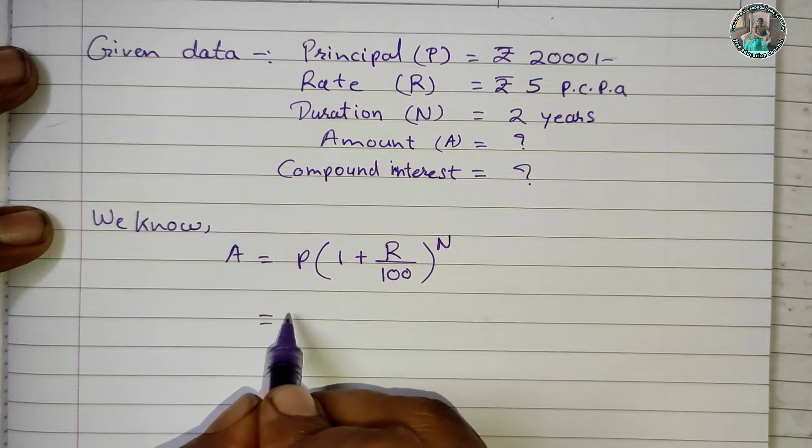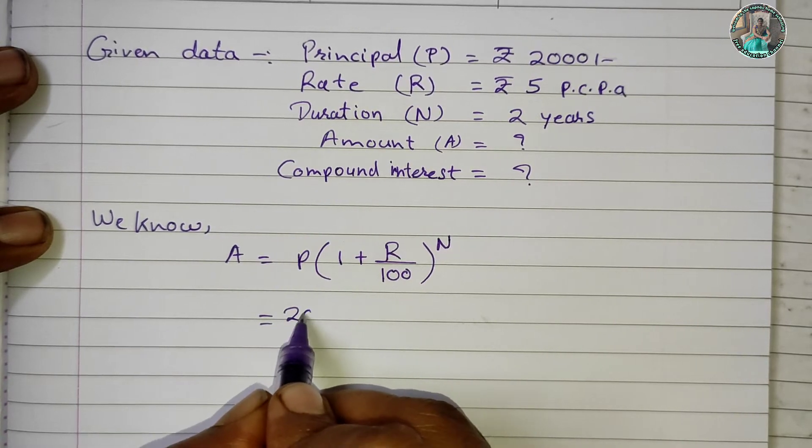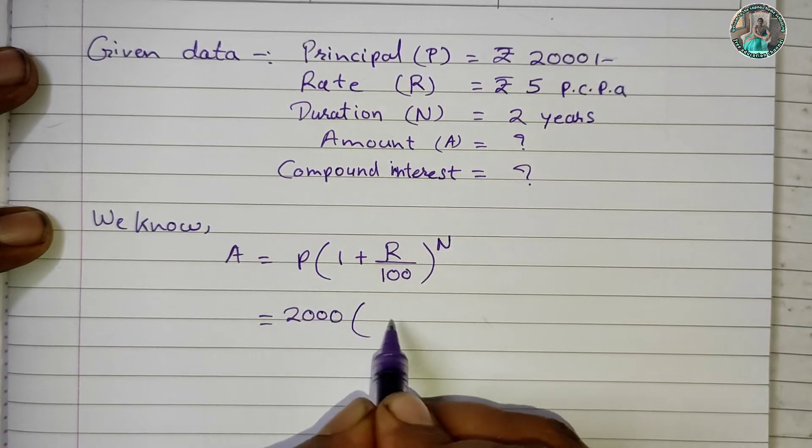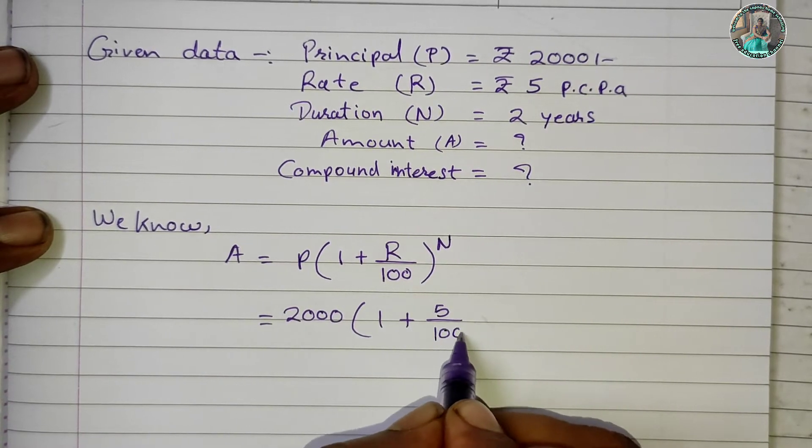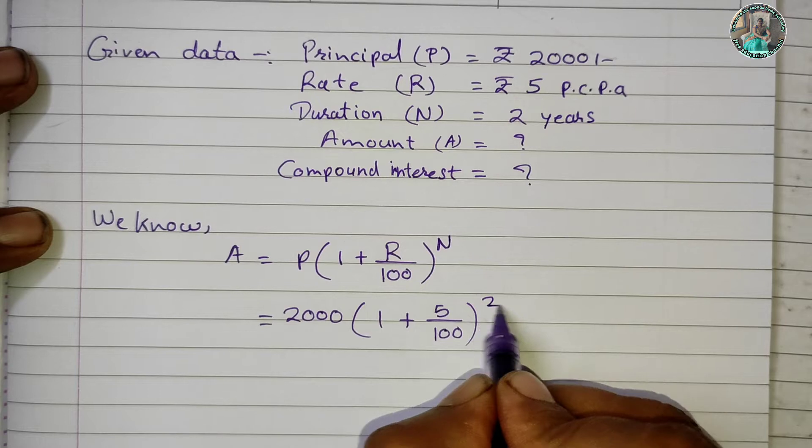The amount is equal to P, where P equals 2000, in bracket 1 plus R which is 5 upon 100, raised to N which is 2.